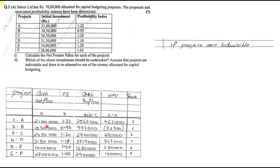The total outflow cannot exceed 70 lakhs. We mix and match various project combinations, add up their NPVs, and the combination giving the maximum total NPV is chosen. Rank 1 is Project D at 31,50,000 and Rank 2 is Project C at 24,50,000 — that totals 56 lakhs. To reach 70 lakhs exactly, if we add Project E, we get exactly 70 lakhs.